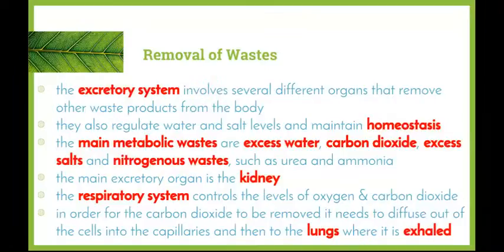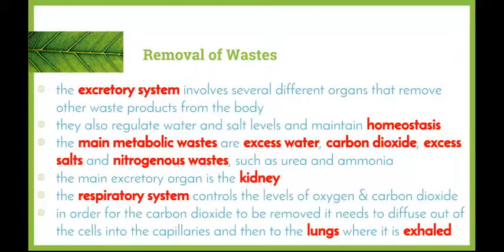So why do we need to get rid of waste? The excretory system involves several different organs that remove waste products from the body. They also help to regulate water and salt levels, and in effect help to maintain homeostasis. The main metabolic wastes that we need to get rid of are excess water, carbon dioxide - which decreases the pH and makes our blood acidic - excess salts, and nitrogenous wastes such as urea and ammonia.